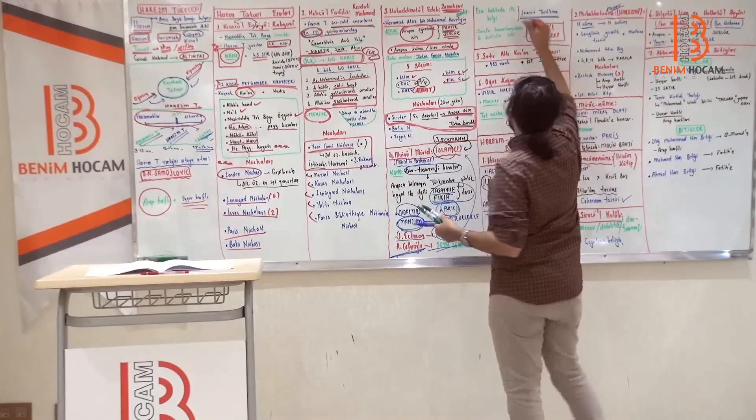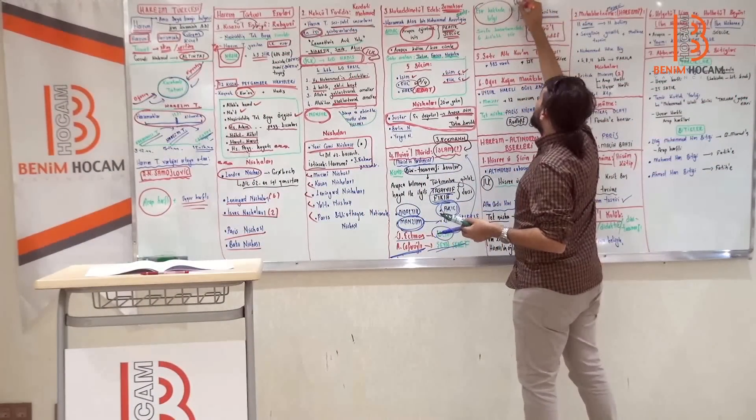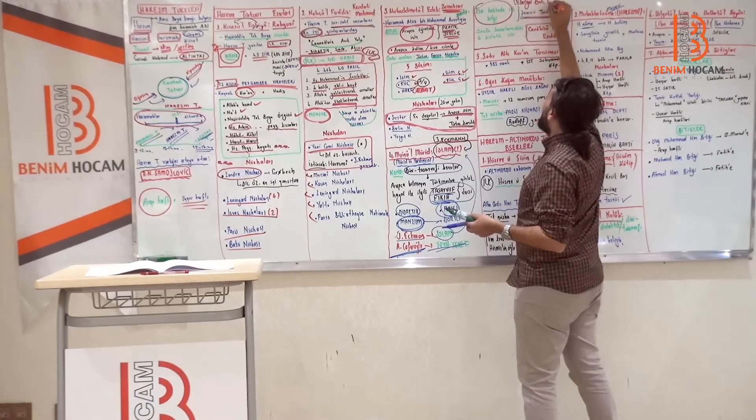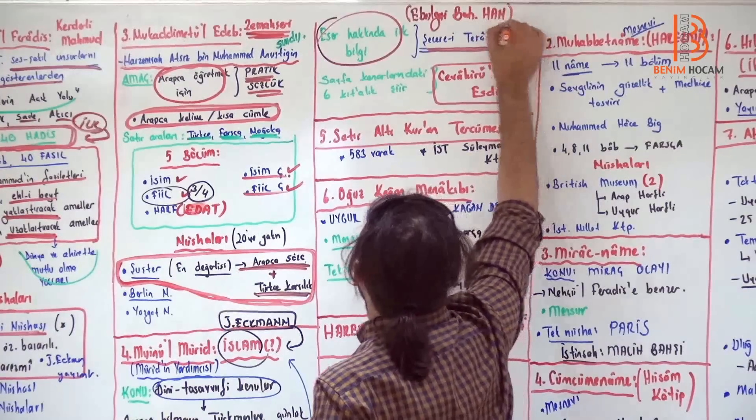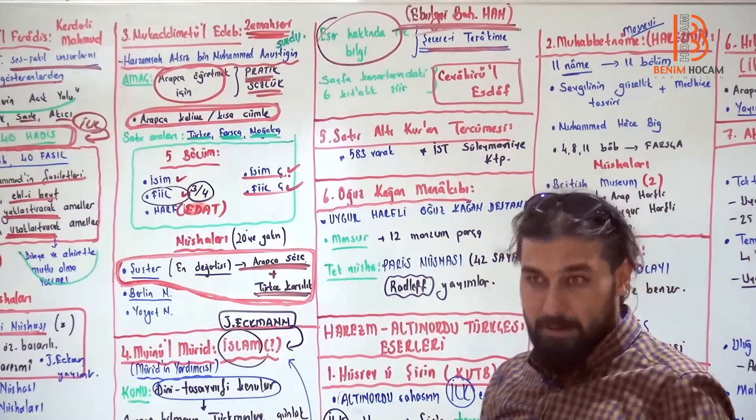Demek ki o Arapça bilmeyen Türkmenlere tasavvufi fıkıh dersi veriyor. Burada tasavvuf ve fıkıh dersi de var. Didaktik. Fıkıh öğretiyor, tasavvuf öğretiyor. Manzum şiir şeklinde dörtlüklerle akıcıdır. Halk için yazıldığı için akıcıdır. Yanoş Ekman yazarın İslam olduğunu söyler şairinin. Ama Ahmet Caferoğlu der ki hayır Şey Şeref der. Ama daha çok kabul ettiğimiz arkadaşlar nedir? İslam'dır. Eser hakkındaki ilk bilgiler Şecere-yi Terakip'de Ebu Gazi Bahadır Han tarafından verilmiş. Demek ki bu bilgileri bize veren Ebu Gazi Bahadır Han'mış.